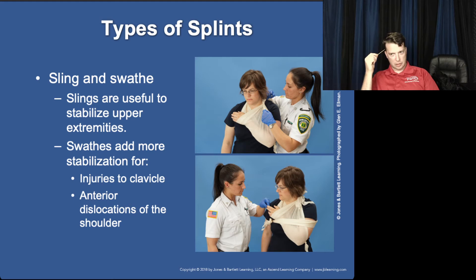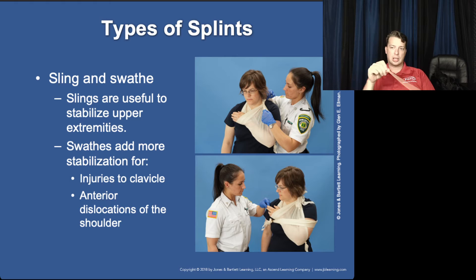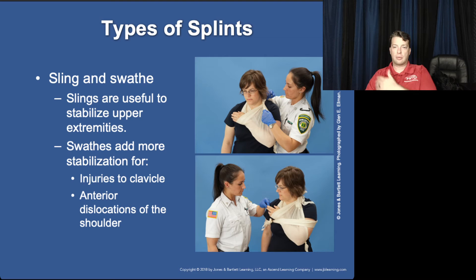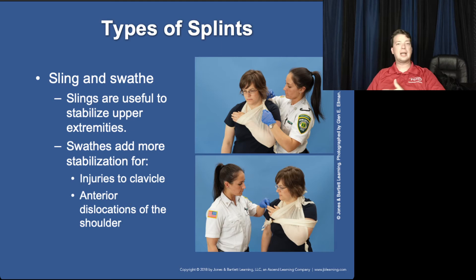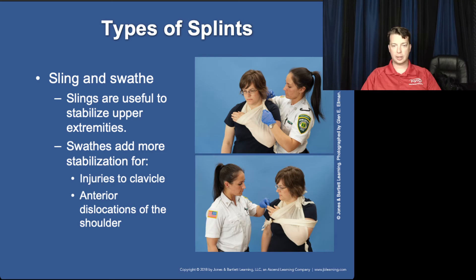My absolute favorite way of treating a shoulder injury, dislocated shoulder, clavicle fracture, or similar is with the sling and swath — the high sling with the swath to hold it to their chest so it's not moving around. When a patient has an extremity fracture like a forearm fracture, you may do a low sling and it doesn't necessarily need to be swathed to their body. The swath is going to be more helpful when it's a shoulder or clavicular injury.